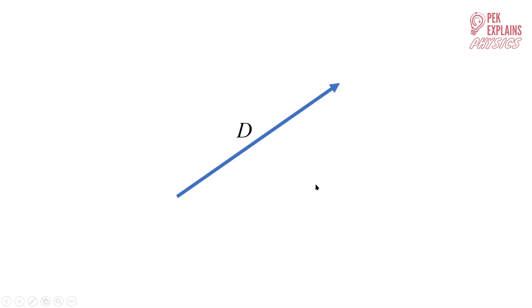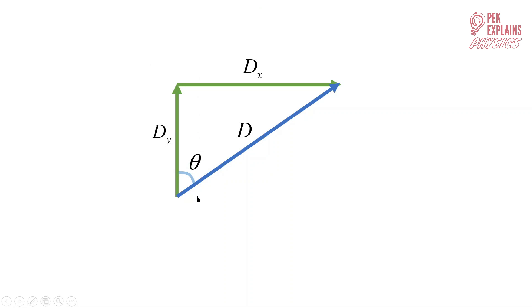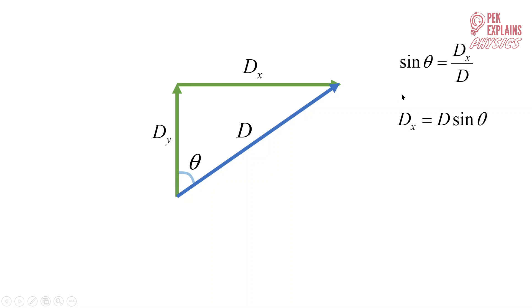Now let's look at the second situation. This time the angle theta is with the Y component — before, theta was with the X component, now theta is with the Y component. Similarly, since this is a right angle triangle we use trigonometry. Sine theta equals opposite over hypotenuse, which is DX over D. So DX equals D sine theta.